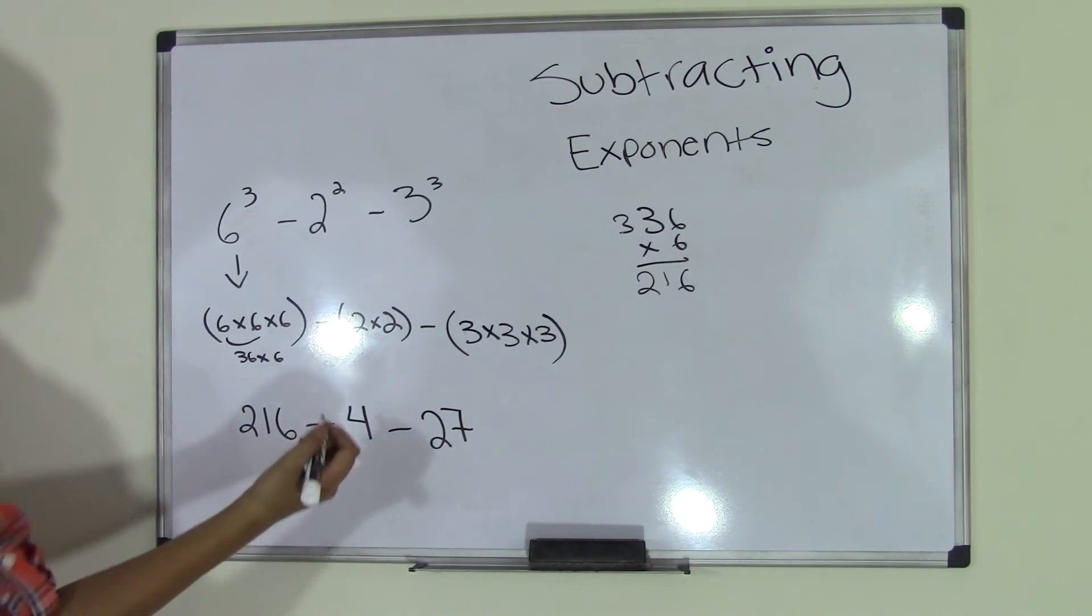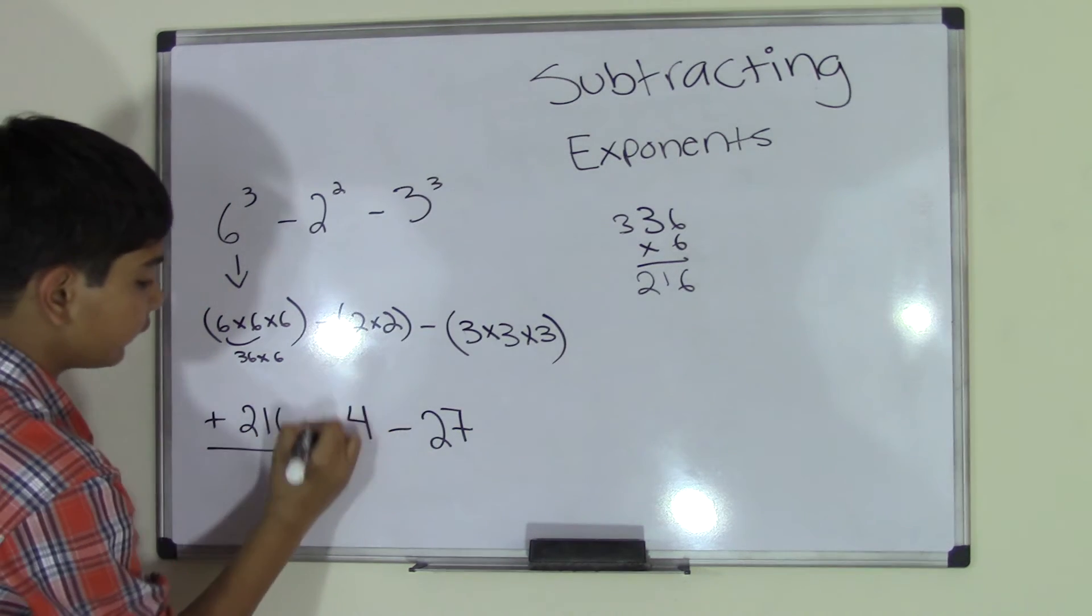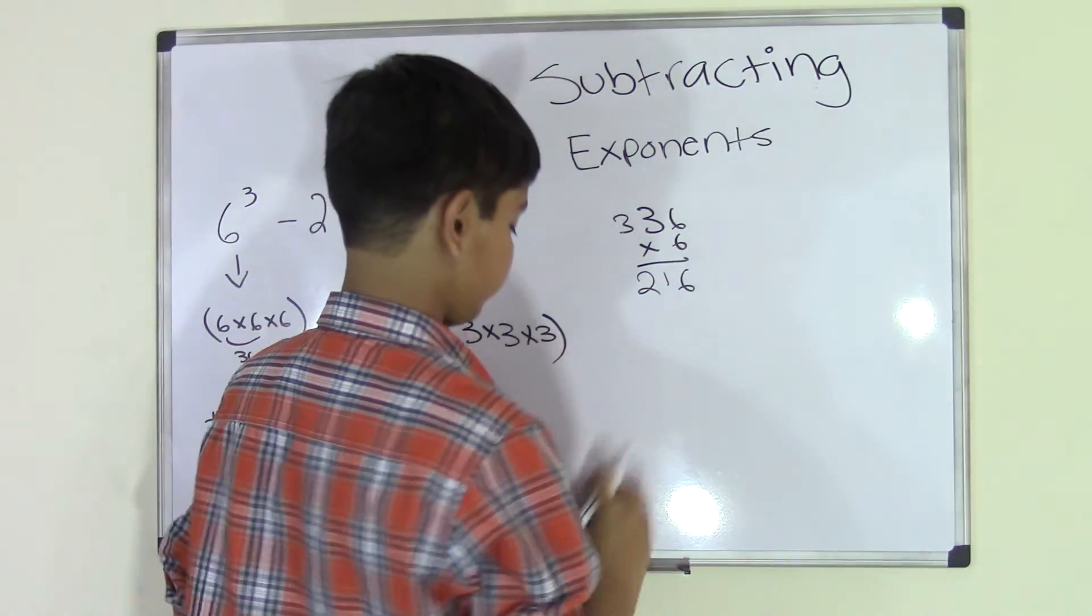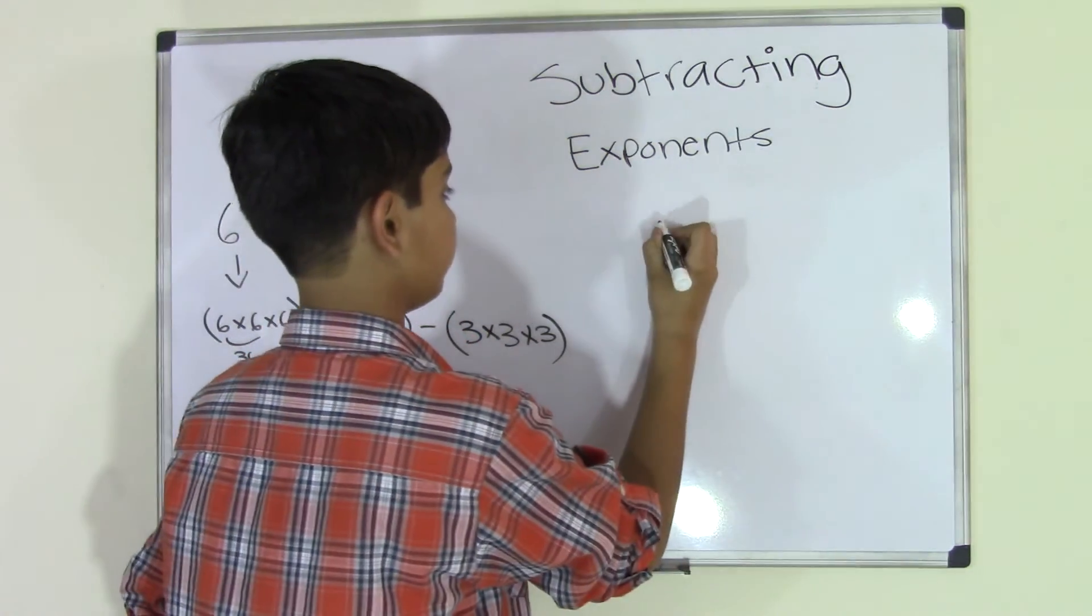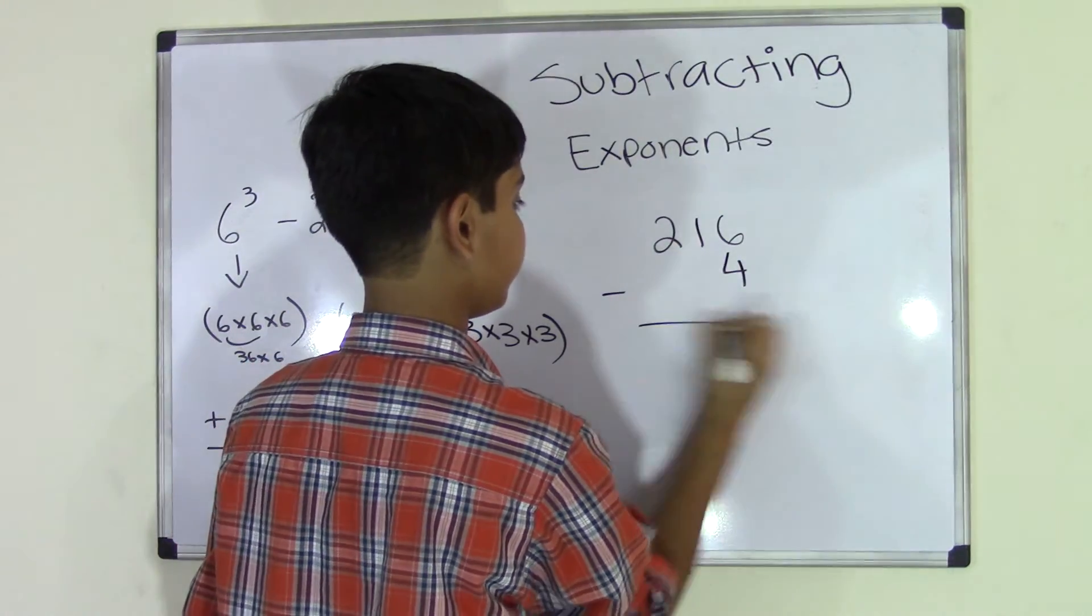So now we have three numbers that we have to subtract. The 216 is a positive number while these two are negative numbers. So we go ahead and write 216 minus 4.